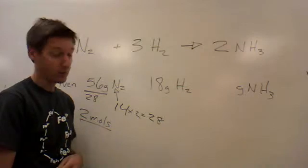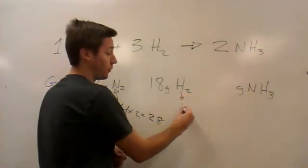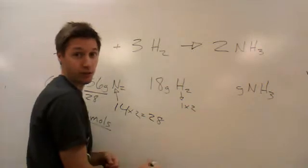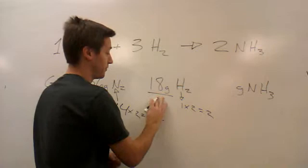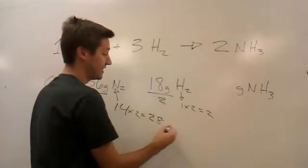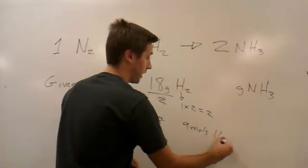How many moles of hydrogen do we have? Hydrogen has a mass on the periodic table of 1. We have two of those, so that's a total mass of 2. 18 divided by 2 is 9. We have 9 moles of hydrogen gas available.